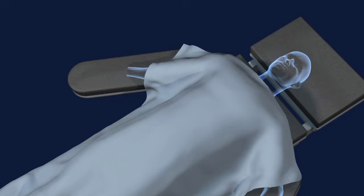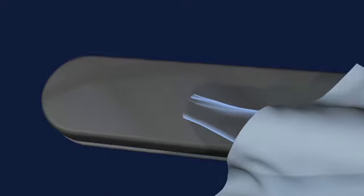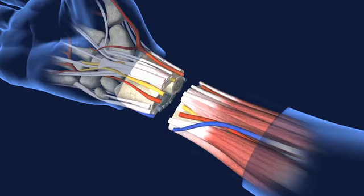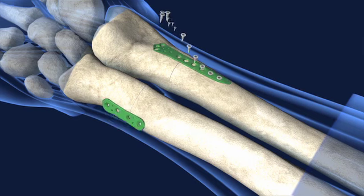The hand transplant procedure begins as incisions on the recipient arm and donor hand reveal the deeper structures. The donor hand is attached by first connecting the radius and ulna bones with metal plates.